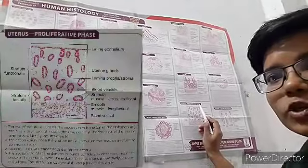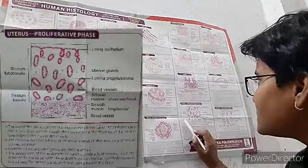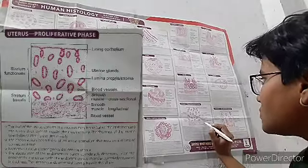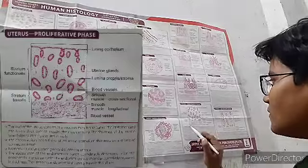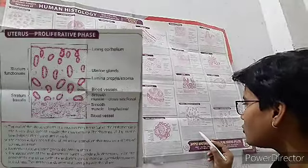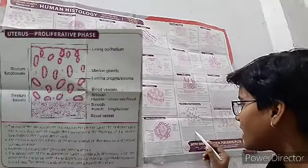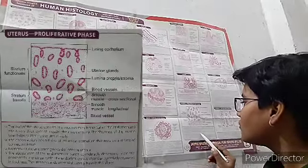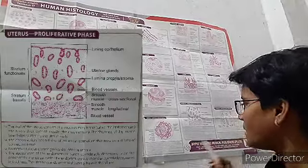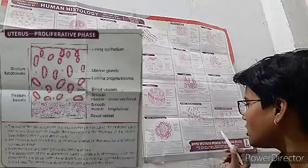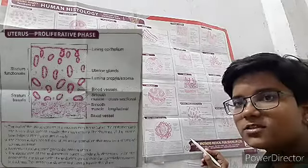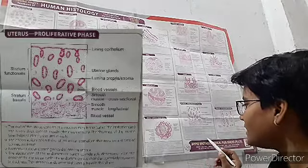Now the uterus in the proliferative phase. Visible structures include stratum functionalis, stratum basalis, lining epithelium, uterine glands, lamina propria, stroma, blood vessels, and smooth muscle. The wall of the uterus consists of the endometrium and a very thick myometrium. The endometrium has a lining of columnar epithelium resting on connective tissue stroma, with numerous tubular uterine glands dipping into the stroma. The endometrium is thin and progressively increases in thickness during this phase; the uterine glands are straight and tubular.